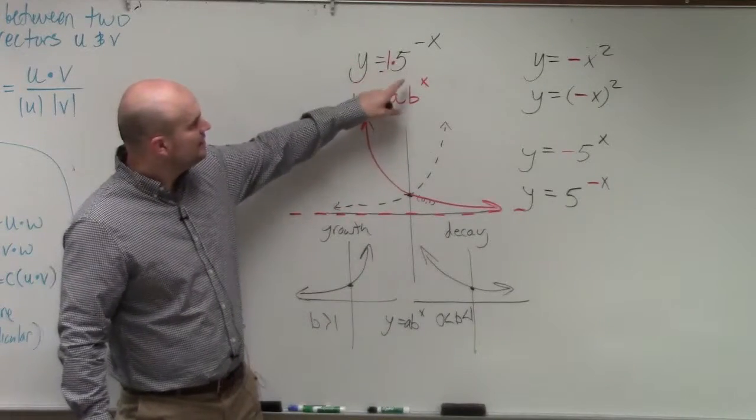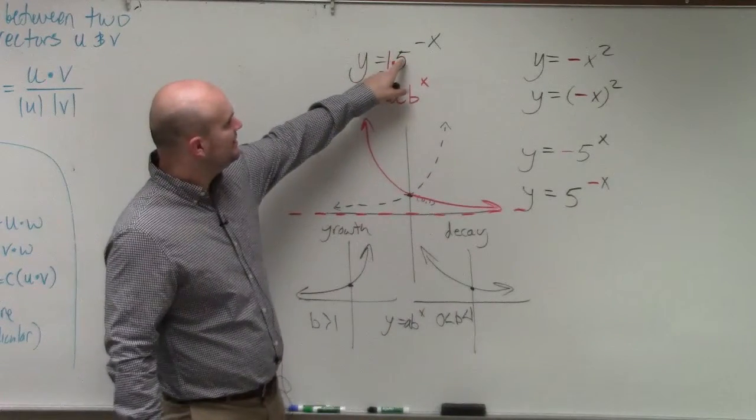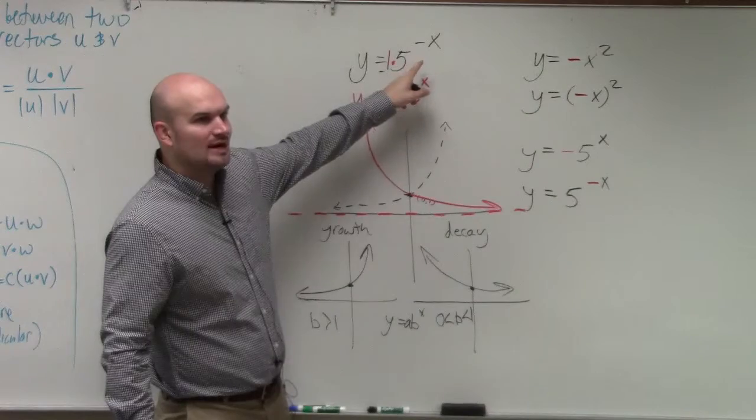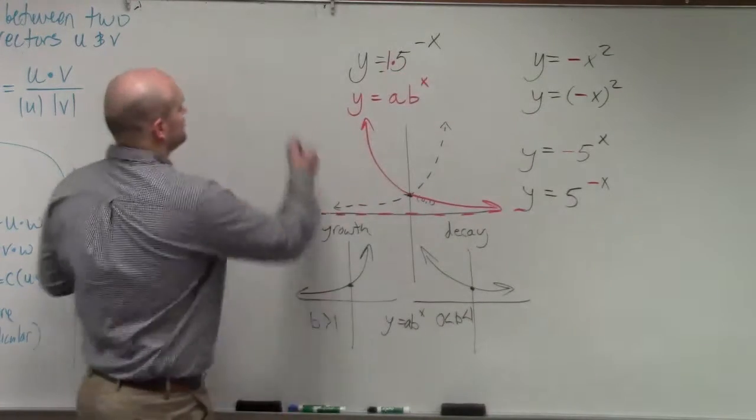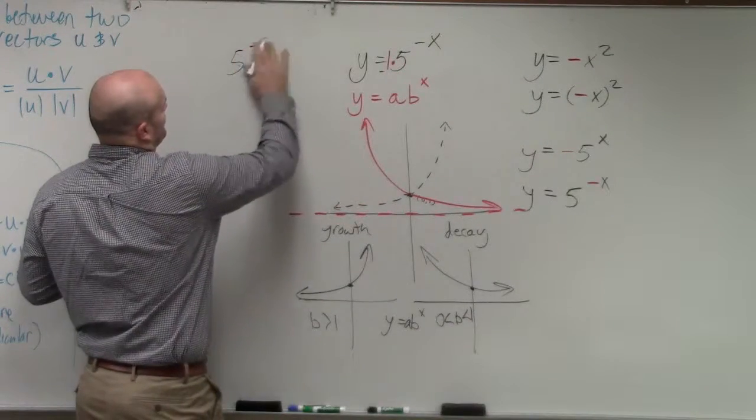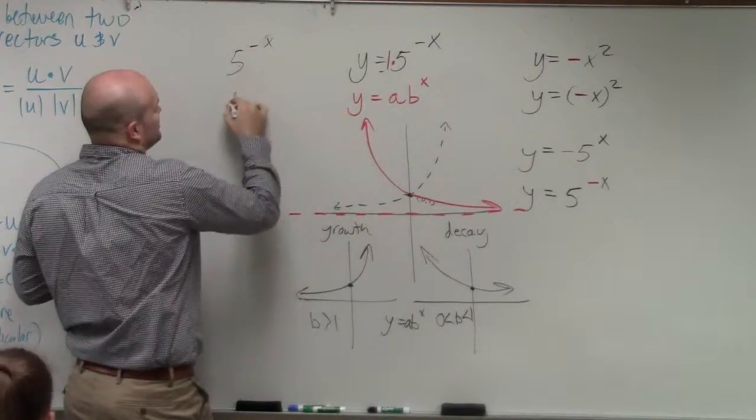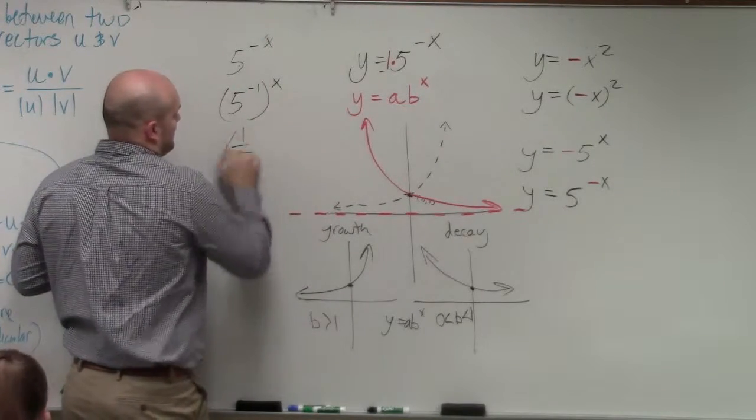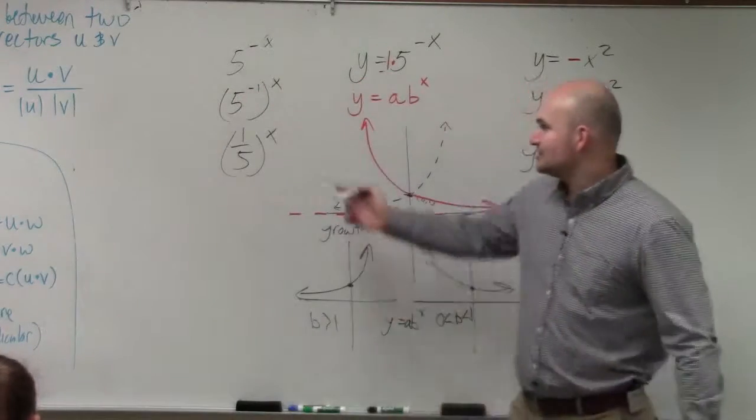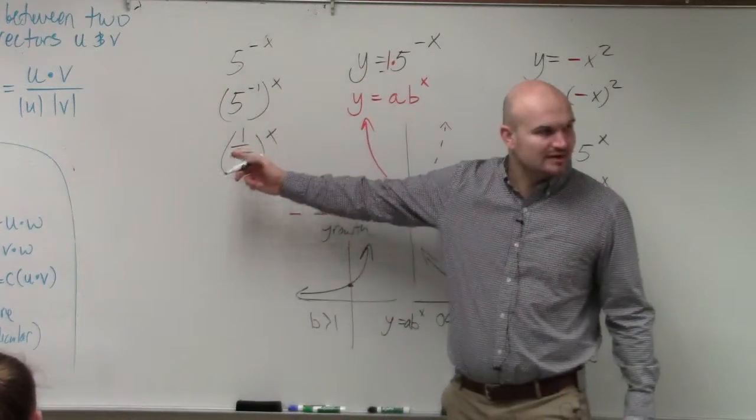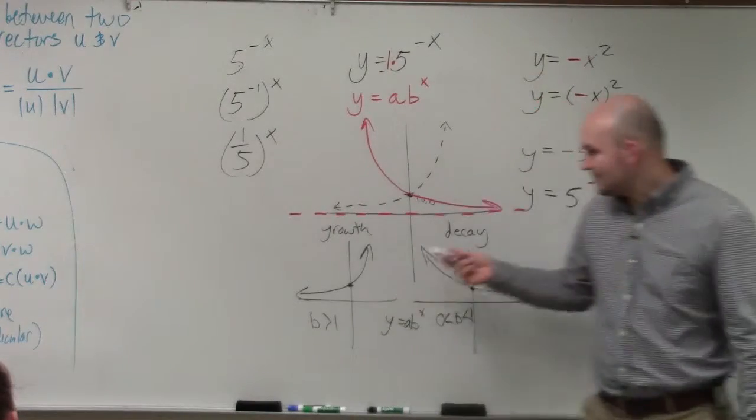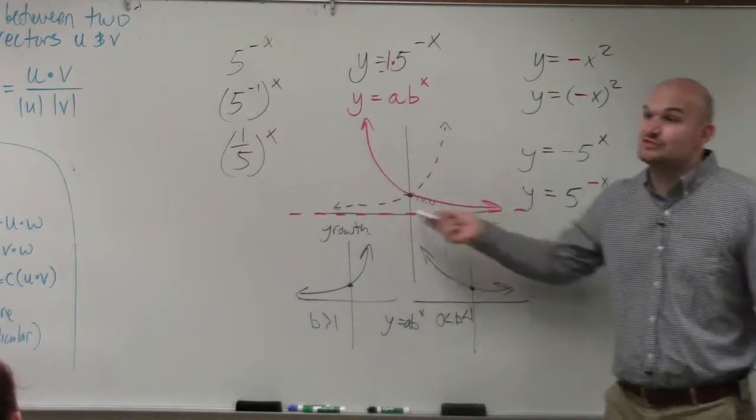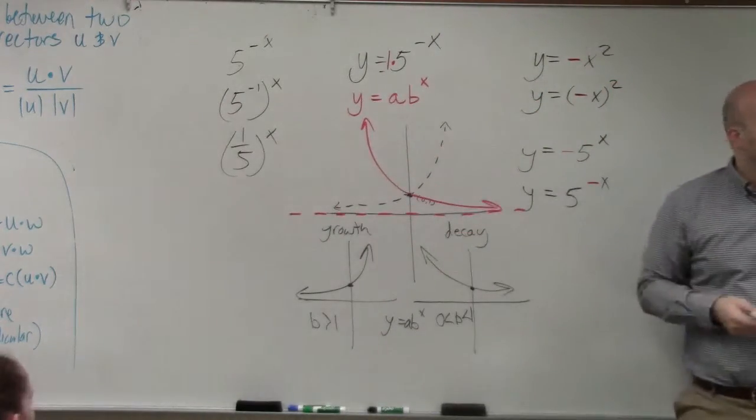And actually, if you were to rewrite this, what is really 5 to the negative x power? This, in reality, ladies and gentlemen, is this. Do you guys actually see how that's 1 fifth, really? So that's why that'd be a decay. OK, so that's why this graph looks like a decay. Or that's why this graph is a decay. Answer your question?